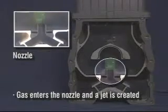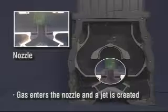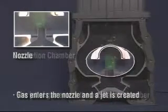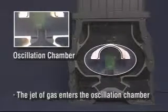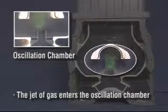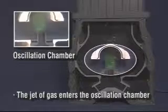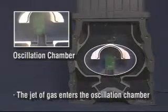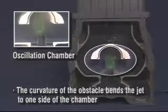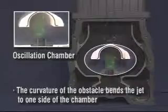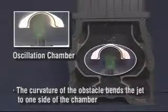Gas enters the nozzle and a jet is created. The jet of gas enters the oscillation chamber where the obstacle controls the fluid feedback paths. Due to the curvature of the obstacle, the jet is bent to one side of the oscillation chamber.